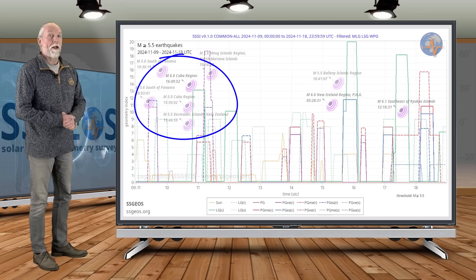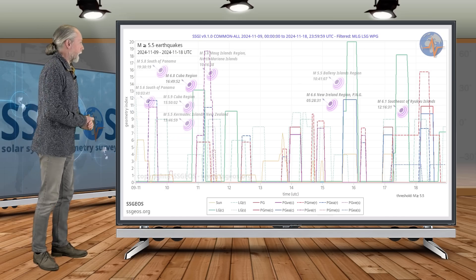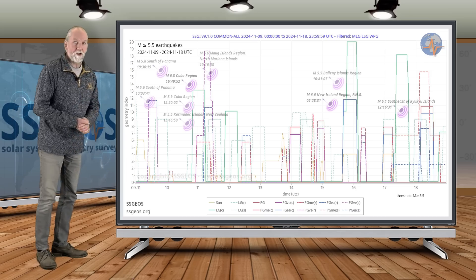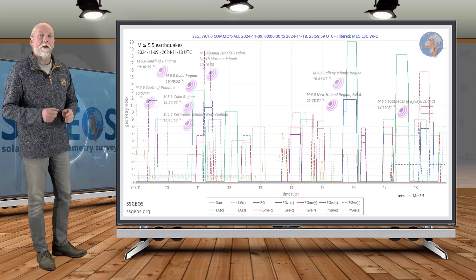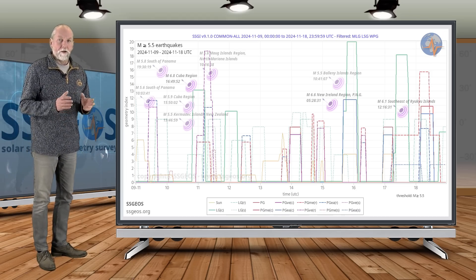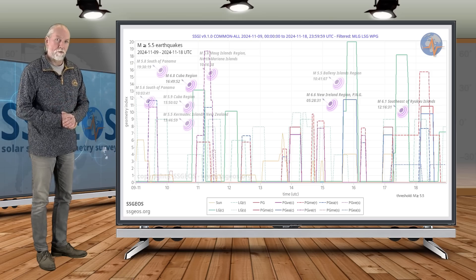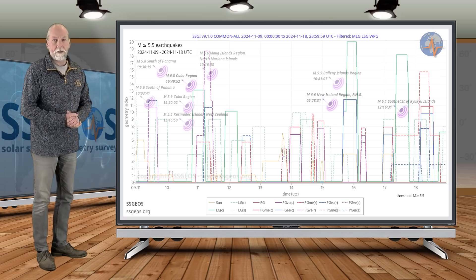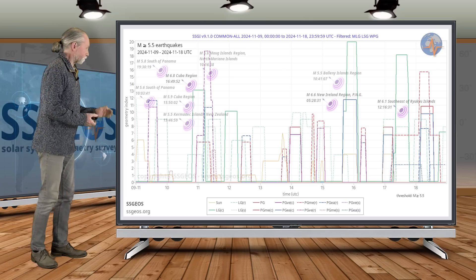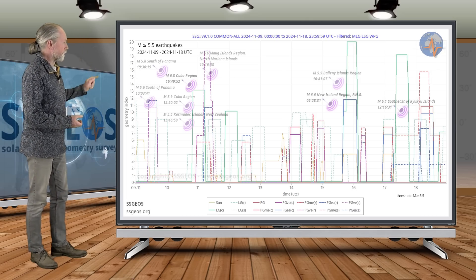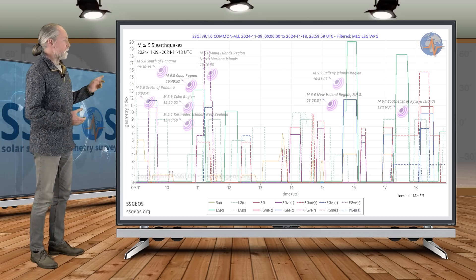Peaking at magnitude 6.8 in the Cuba region. You may recall in the previous update that I mentioned the Caribbean plate fluctuation was actually a little bit to the west near Puerto Rico, but we did have the 6.8 at Cuba.